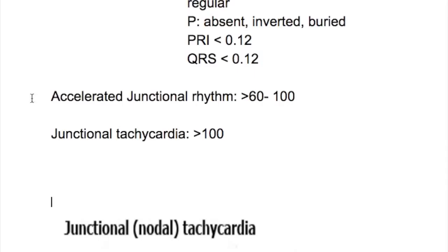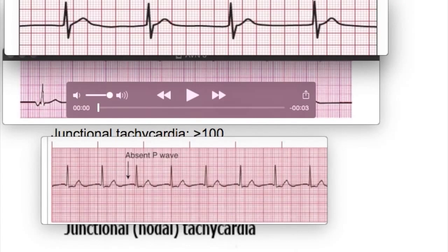The second rhythm is the accelerated junctional rhythm. The difference between the junctional rhythm and the accelerated rhythm is the rate only. The rate here is 60 to 100, and the third one is junctional tachycardia where the rate is more than 100.